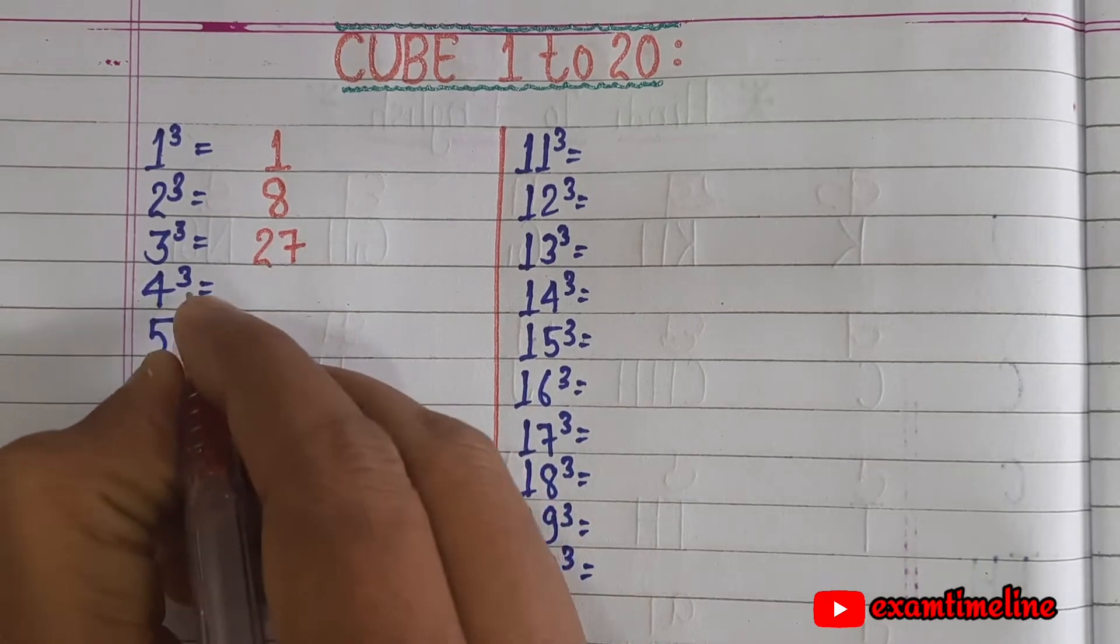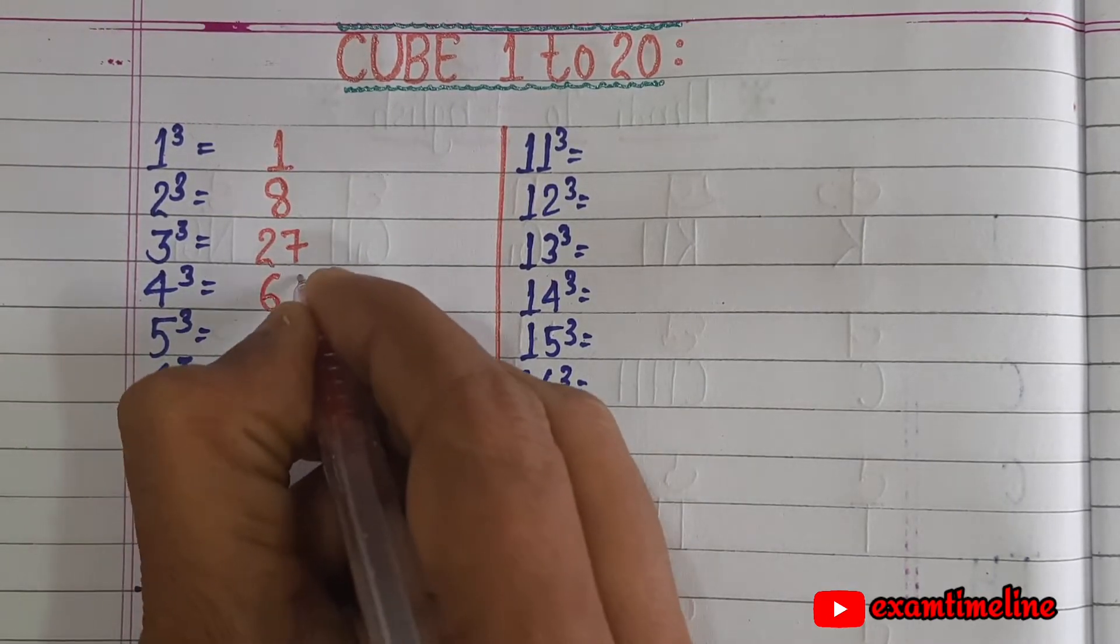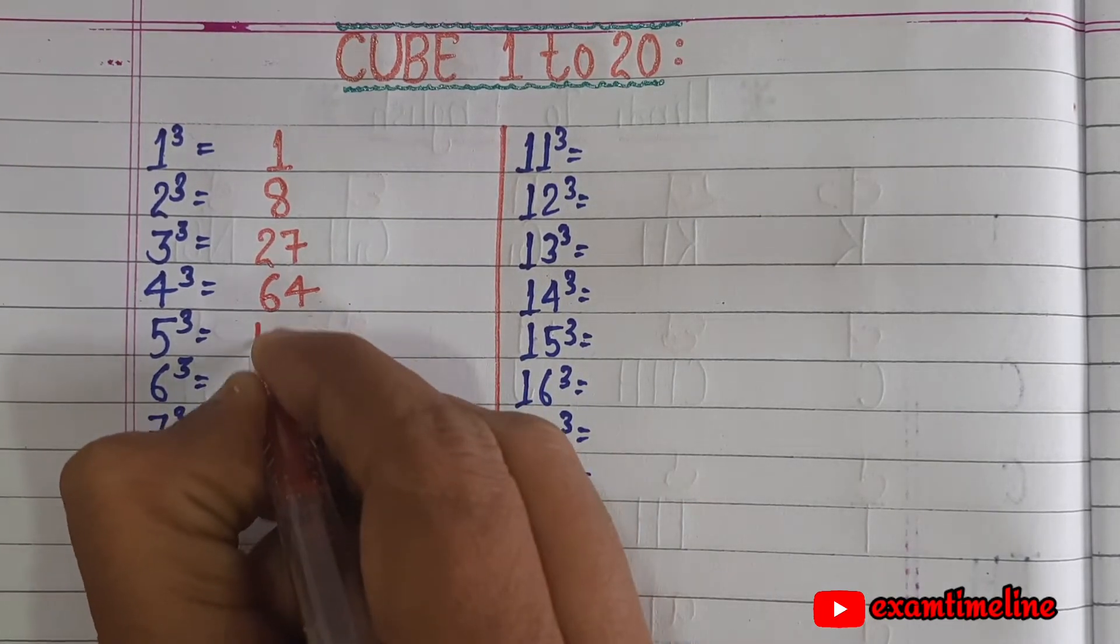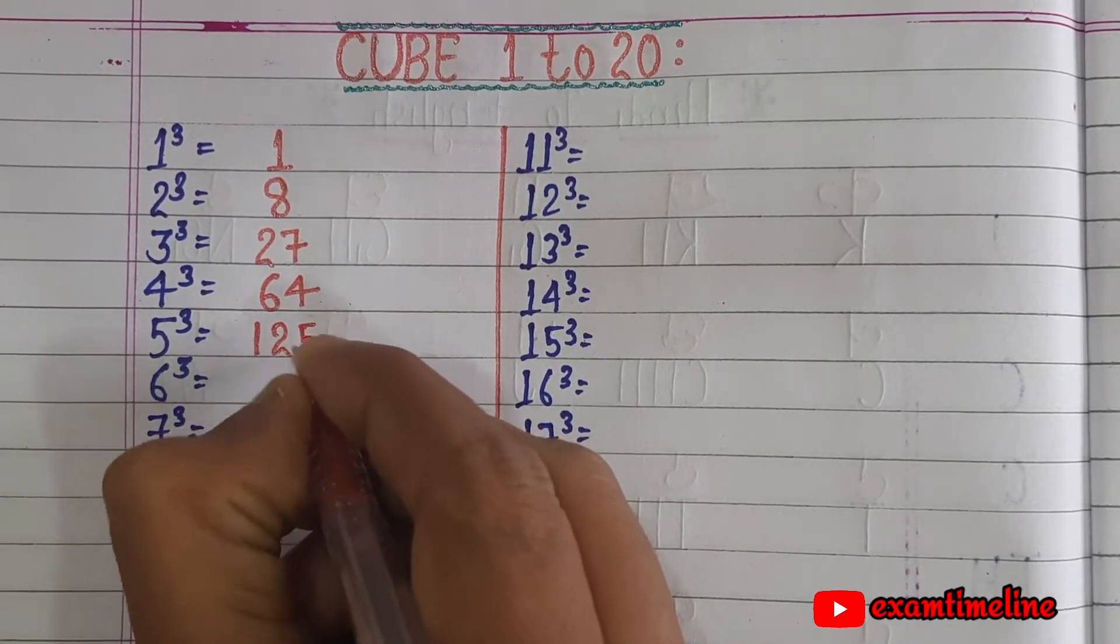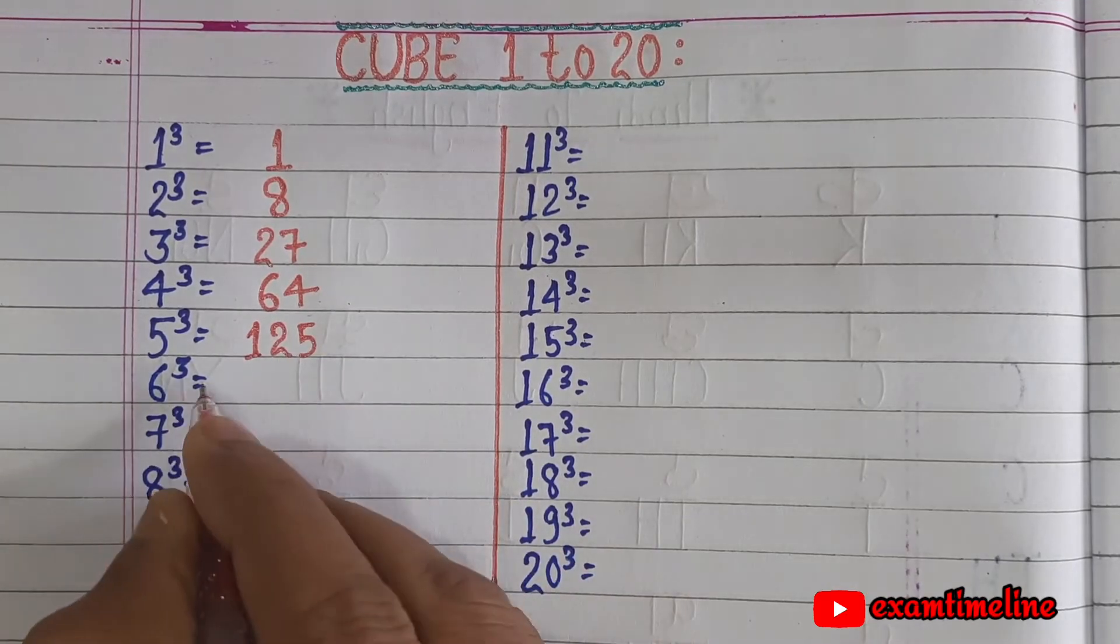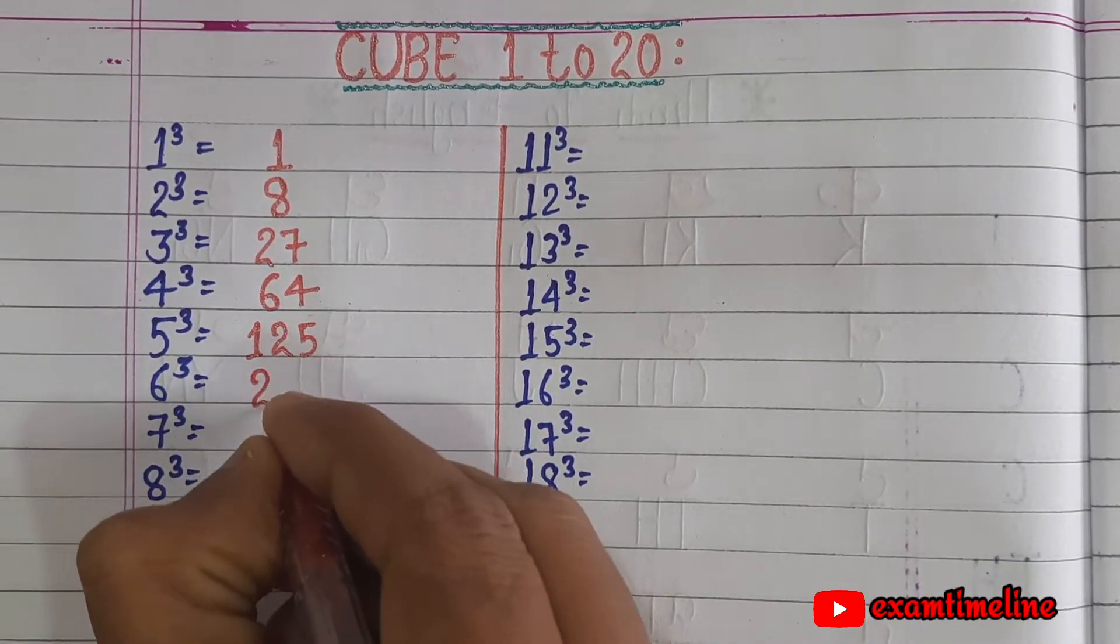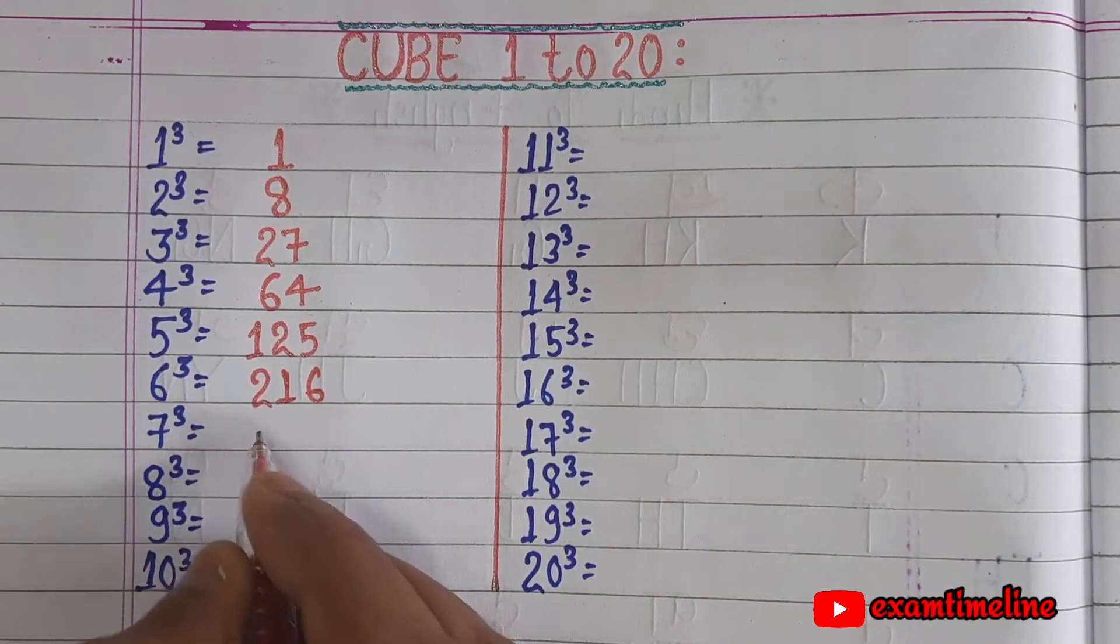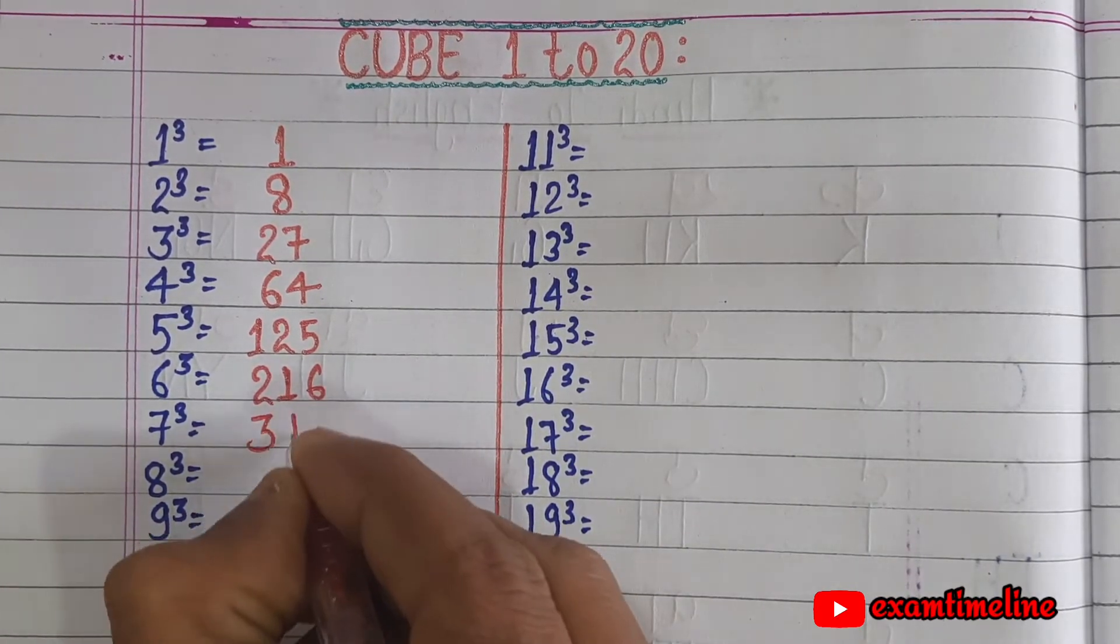4 cube equals 64, 5 cube equals 125, 6 cube equals 216, 7 cube equals 343.